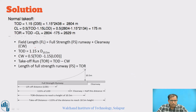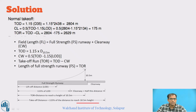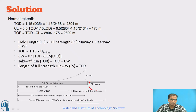For the normal takeoff case, we calculate TOD, clearway (CL), and TOR. Takeoff distance TOD equals 115% of D10.5. D10.5 is given as 2438, so TOD equals 1.15 times 2438, which gives 2804. Clearway equals half the TOD minus 115% of LOD. With TOD equal to 2804 and LOD given as 2134, we can calculate the clearway available.